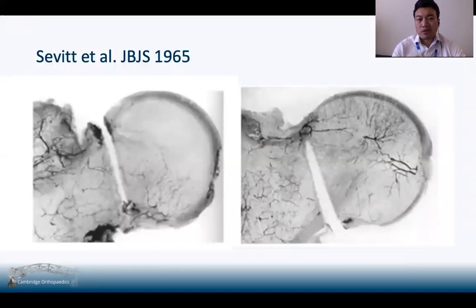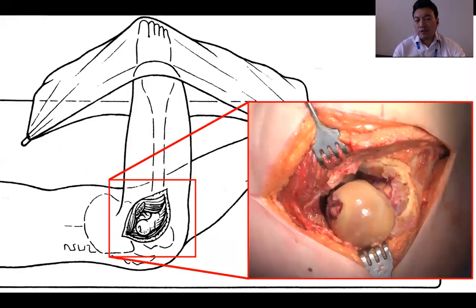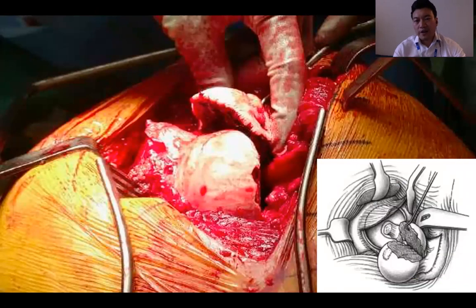This anatomical study again highlights the importance of the superior retinacular vessels. If you damage that vessel, you seriously compromise the blood supply to the femoral head, whereas damage to the inferior retinacular vessels is less dramatic. Now, as you would in a hemiarthroplasty, place the leg in a leg bag and dislocate the hip. You get a really good view of the femoral head and may need to release the ligamentum teres to complete the dislocation. At this point you can reduce your Pipkin fracture and secure it with screws.